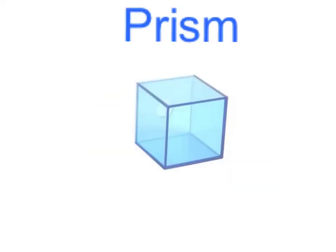Prism, a 3D shape with two parallel and congruent bases. The side pieces are formed by congruent rectangles.